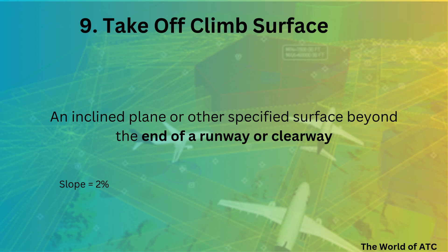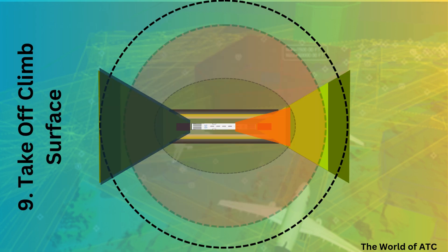It has a slope of 2%, and once it is added into the OLS diagram for one runway, the overall OLS diagram would look like this. You can see the bluish triangle.